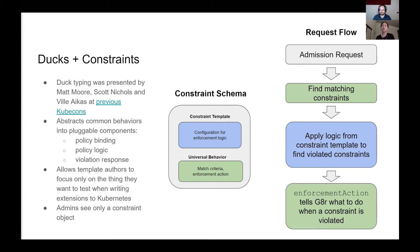This is similar to polymorphism in object-oriented programming. Our ducks are constraints. Our goal for admins is that they are able to define different types of constraints that share universal behavior — for instance, all constraints can use label selectors. We do this by creating a parent class for the constraint that implements universal behaviors. Template authors are able to create subclasses by injecting their enforcement logic and its function signature by declaring a constraint template resource. The constraint template is combined with this universal behavior to create a new constraint kind.